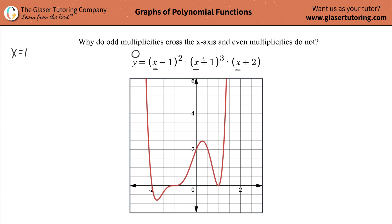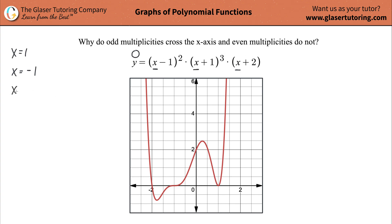Then let's look at the next factor. If x were equal to negative one, then negative one plus one gives me zero. Zero cubed is still zero, and zero multiplied by the other factors is still zero. So I should also have a zero at x equals negative one. And then last but not least, if x were equal to negative two, negative two plus two is zero, and zero times anything is zero. So when x equals negative two, that should also be a zero value. These should be the x-values where the function crosses or touches the x-axis.